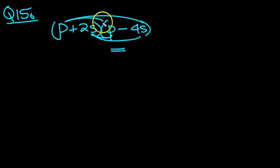The first line then is P times P, which is P squared. The second line, minus 4s times P, which will be minus 4sp.